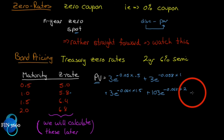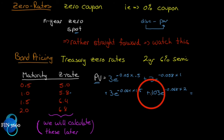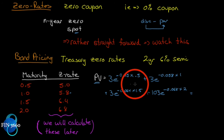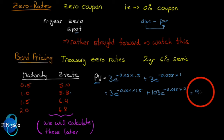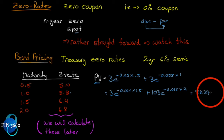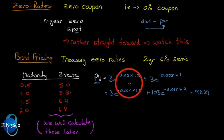This is easily solved on any calculator because we're not solving for anything — we know every value. The result is 98.39.